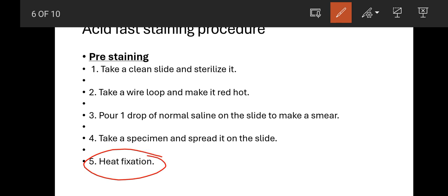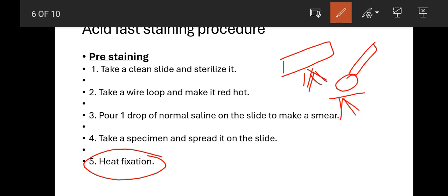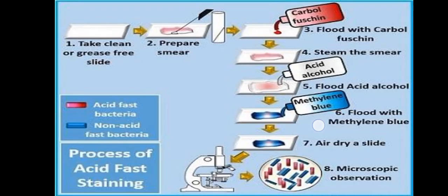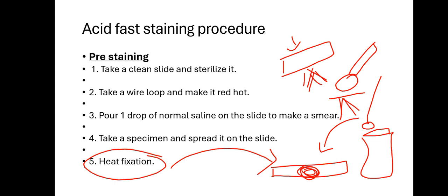Then perform heat fixation. So to summarize the pre-staining steps: you passed the slide briefly over the flame to sterilize it, sterilized the wire loop over the flame, collected the specimen with the wire loop from the bottle and spread it on the slide with one drop of normal saline, then performed heat fixation. This completes the pre-staining or slide preparation procedure. Take a clean grease-free slide, prepare smear, and perform heat fixation.